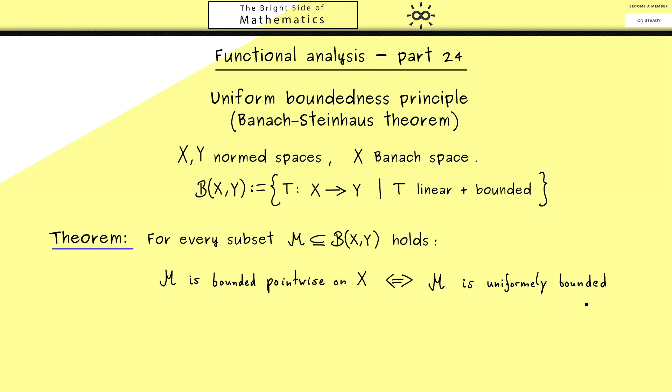Maybe the word uniformly bounded is easier to understand because it's just a normal definition of boundedness in a normed space B(X,Y) together with the operator norm. Therefore I can write that down as: there exists a constant C ≥ 0 such that for all operators T in M, the operator norm of T is less or equal than C.